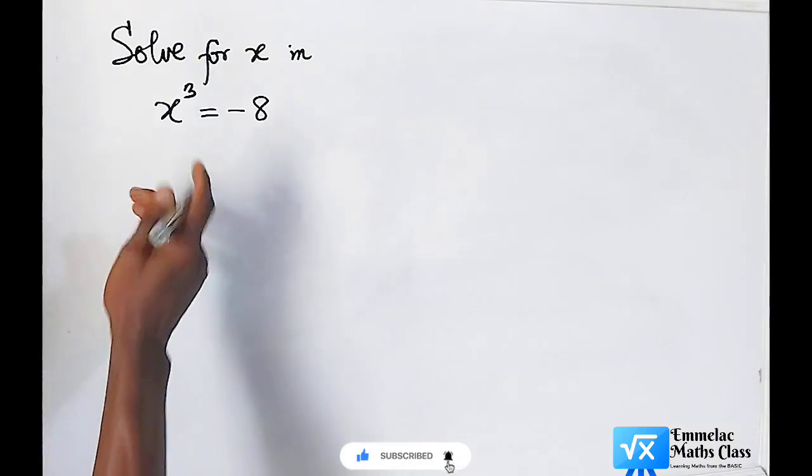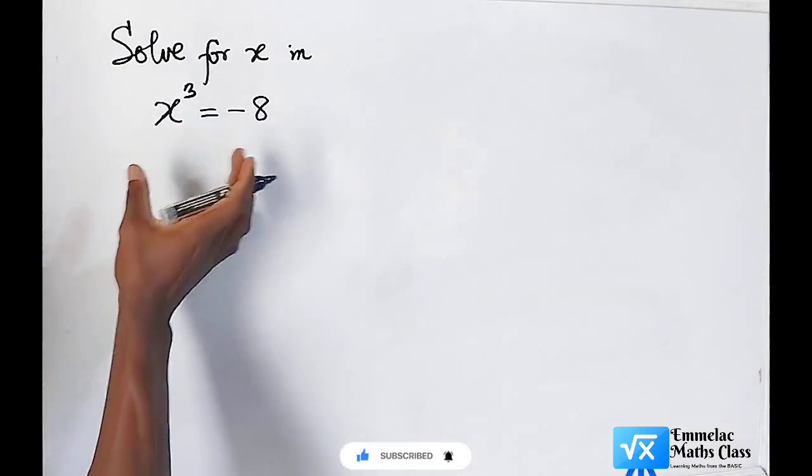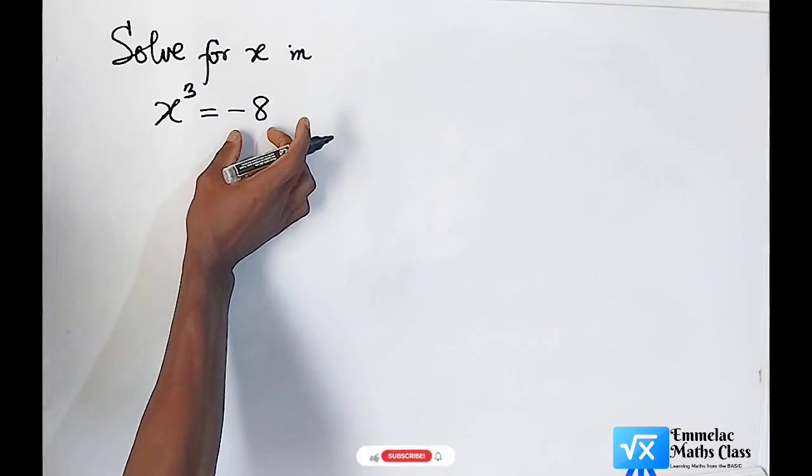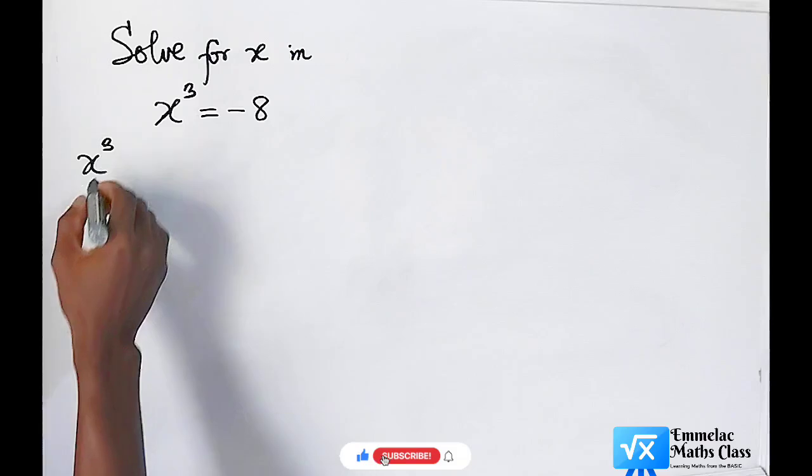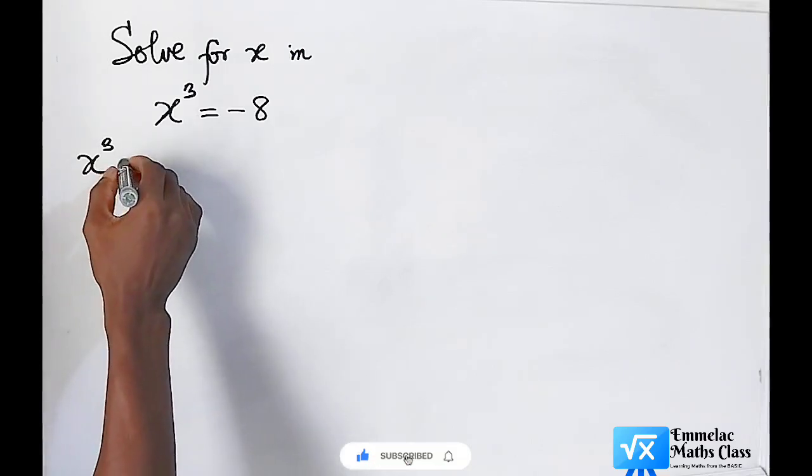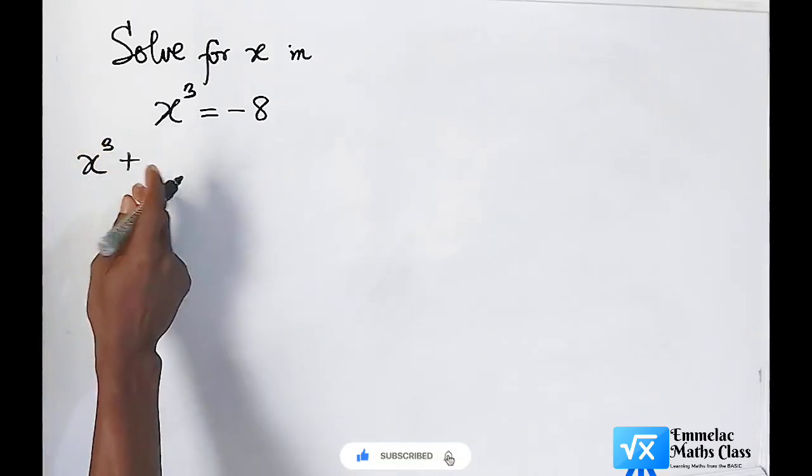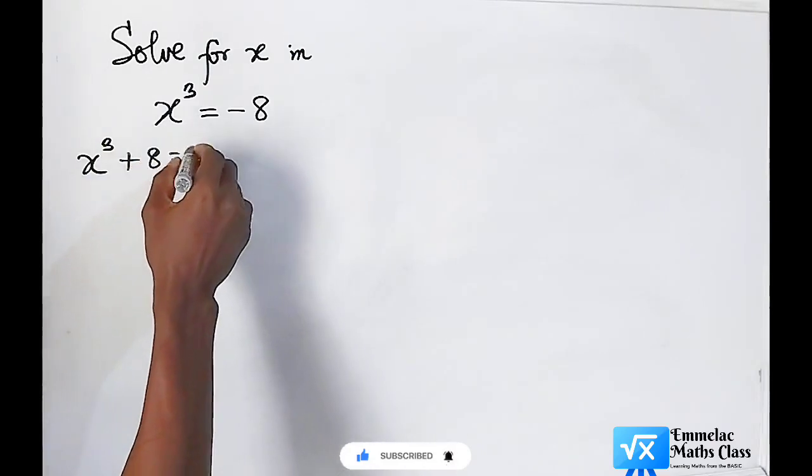To start with, the best way we can probably start solving this is to bring negative 8 to the left hand side. The equation will become x raised to the power of 3 plus 8, then equals 0.